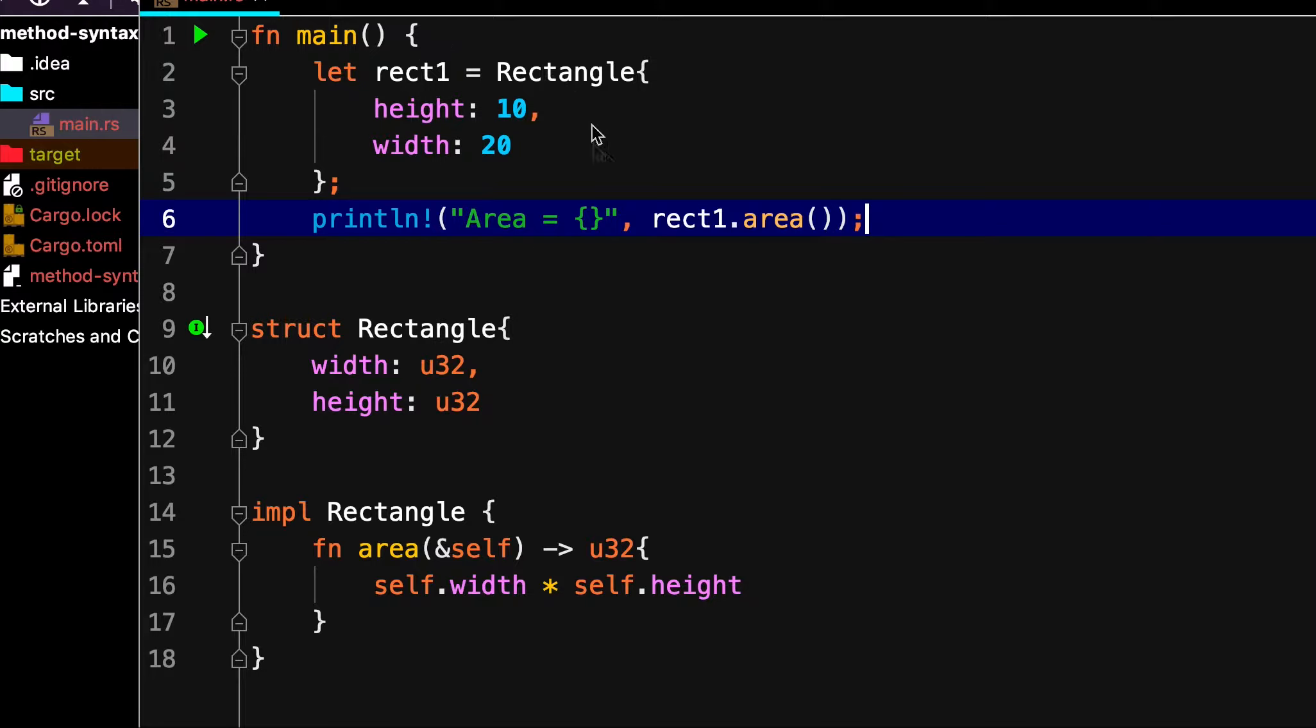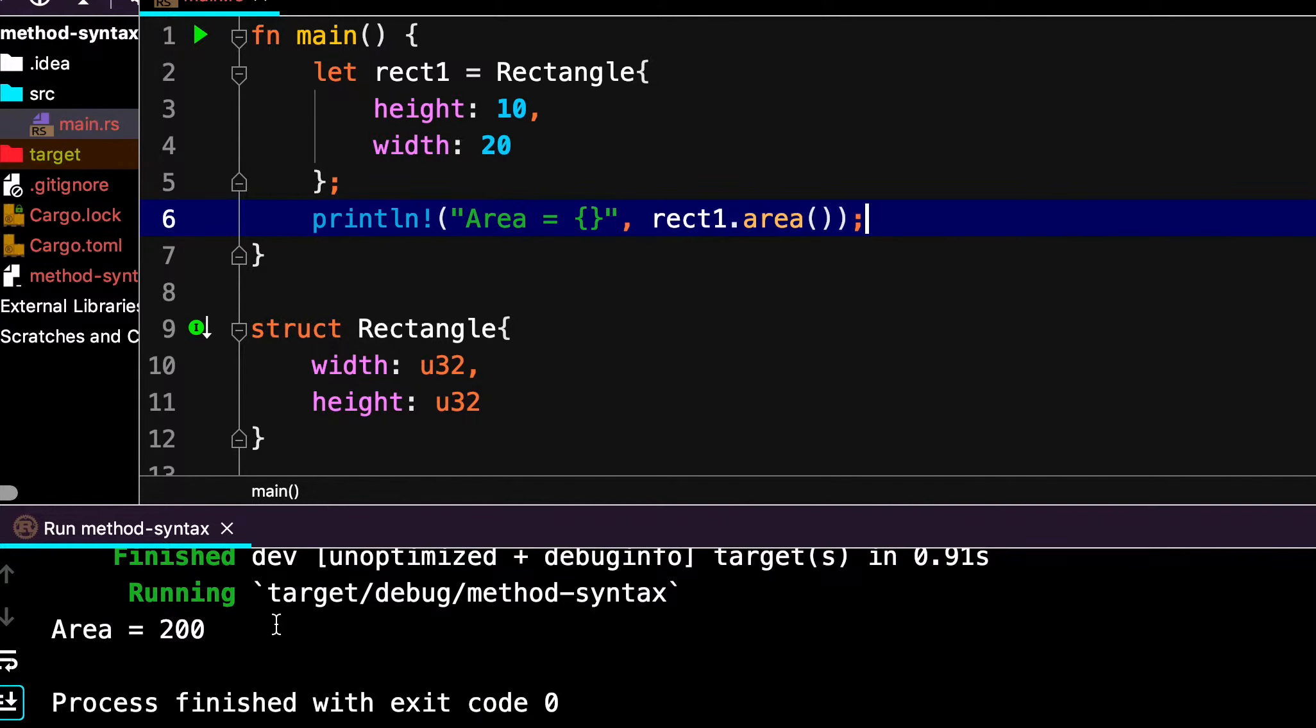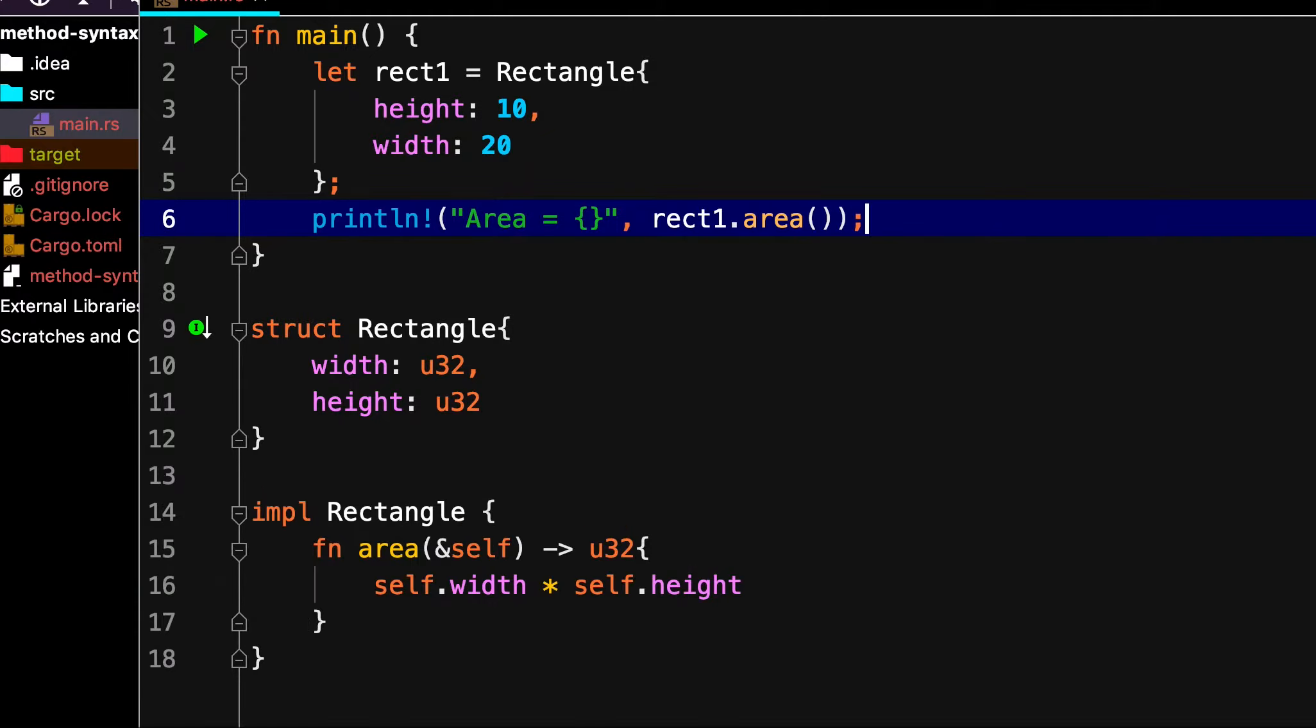Now we will print the area and let's run it. And you see that it has correctly computed the area, that is 200 in this case.